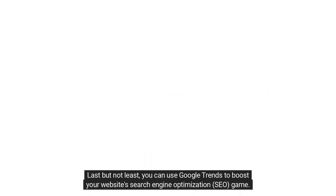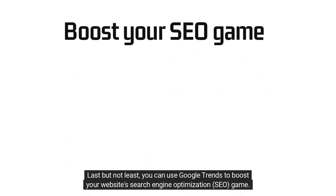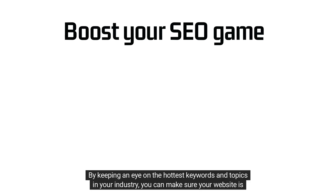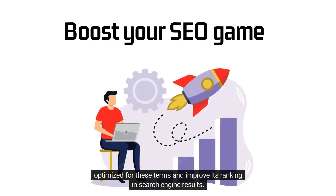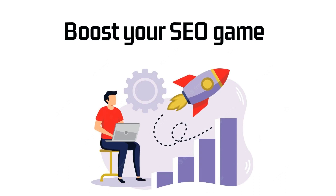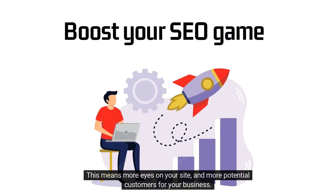Last but not least, you can use Google Trends to boost your website's search engine optimization, or SEO game. By keeping an eye on the hottest keywords and topics in your industry, you can make sure your website is optimized for these terms and improve its ranking in search engine results. This means more eyes on your site and more potential customers for your business.